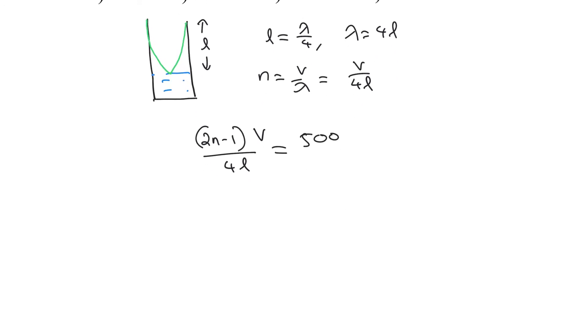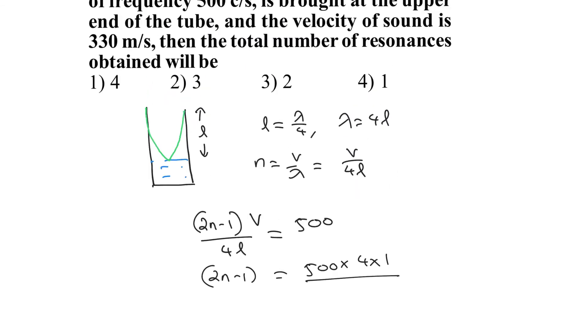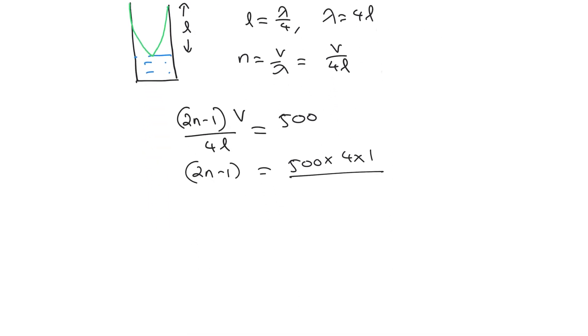The maximum value of length can be equal to 1 meter. So we can find out the value of n. 2N minus 1 should be equal to 500 into 4 into 1 divided by velocity, which is given as 330 meters per second.